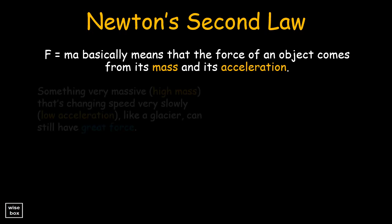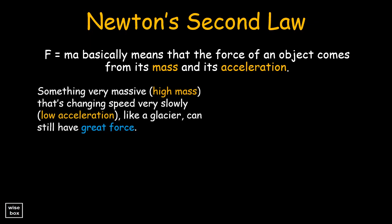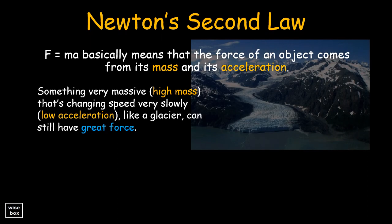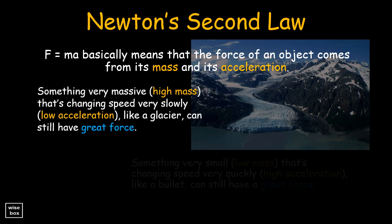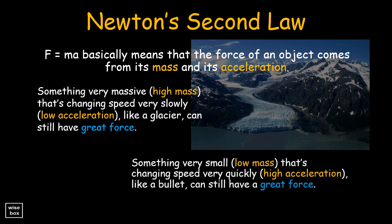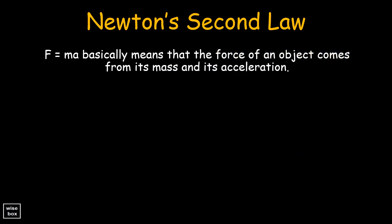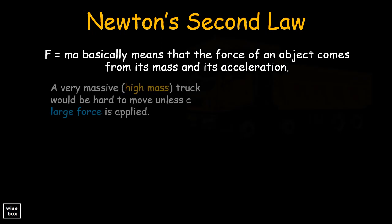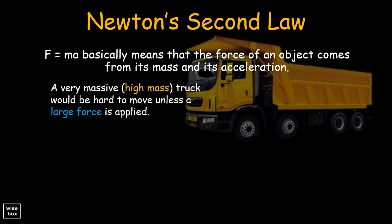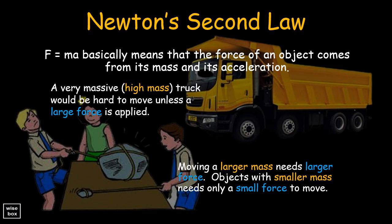For example, something very massive — high mass — that's changing speed very slowly — low acceleration — like a glacier, can still have great force. And also, something very small with low mass that's changing speed very quickly — high acceleration — like a bullet, can still have a great force. It also means that a very massive truck would be hard to move unless a large force is applied. Moving a larger mass needs larger force, and objects with smaller mass need only a small force to move.